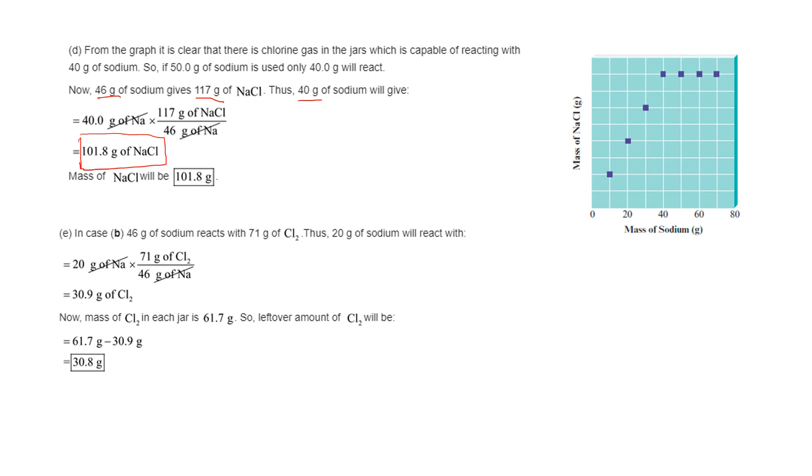In the last part, another proportion question. We want to find out the mass of the leftover, so you first need to find the amount of chlorine if you have 20 grams of sodium, and that's going to give you 30.9.